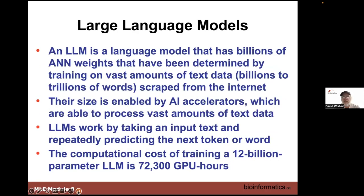A large language model has billions of weights determined by training on tens of billions — in some cases trillions — of words scraped from the internet for ChatGPT 4. That includes documents, databases, Wikipedia, abstracts from PubMed, and even text messages people have been sending, to get more information about how people talk and communicate, and through that, gaining knowledge or facts.